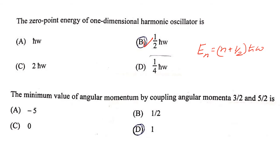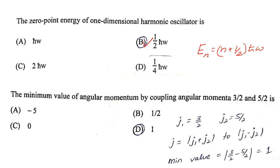The next question: the minimum value of angular momentum by coupling j₁ = 3/2 and j₂ = 5/2. The total angular momentum ranges from j₁+j₂ to |j₁−j₂|. The minimum value is |3/2 − 5/2| = |−1| = 1. Therefore, the answer is 1.